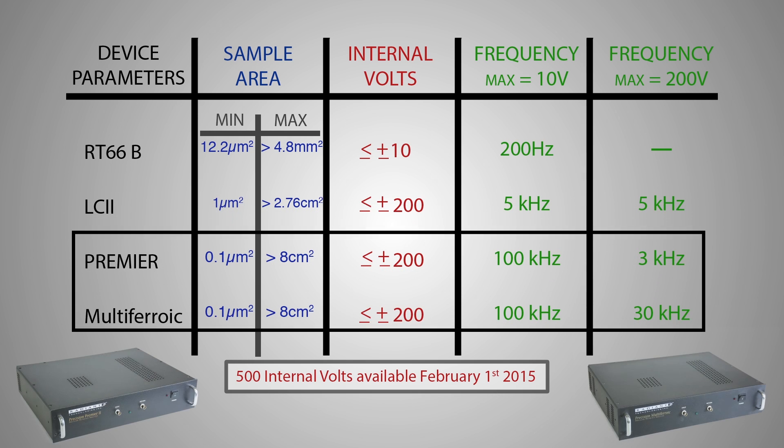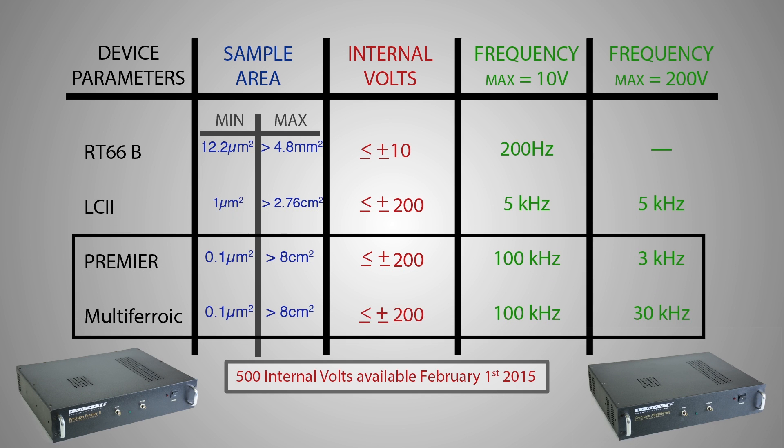The Precision Premier and Precision Multiferroic test systems are the most powerful offered by Radiant. Many of their specifications are the same, but they differ in their maximum test frequency when using internally generated high voltage. For instance, the Precision Premier can execute a 200-volt hysteresis loop at 3 kHz, but the Precision Multiferroic can execute the same test at 30 kHz.